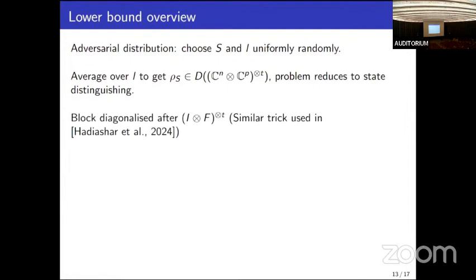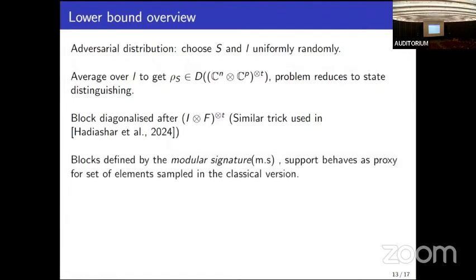We found that applying the Fourier transform onto each of the padding registers block-diagonalizes the resulting state. Moreover, the blocks themselves are defined by something called the modular signature — basis states belonging to the same block share the same modular signature. The support of the modular signature serves as a proxy for the set of elements collected in the classical coupon collector process.